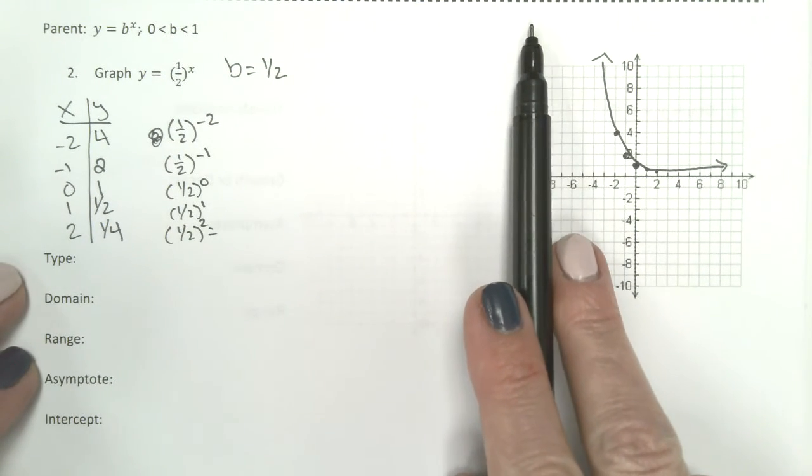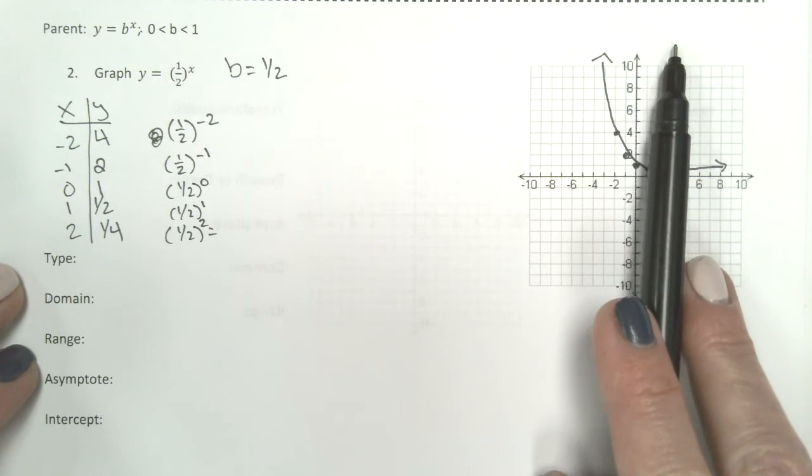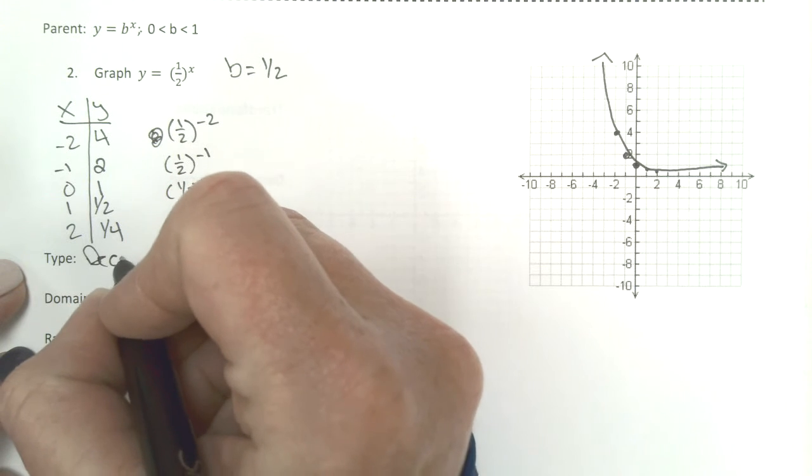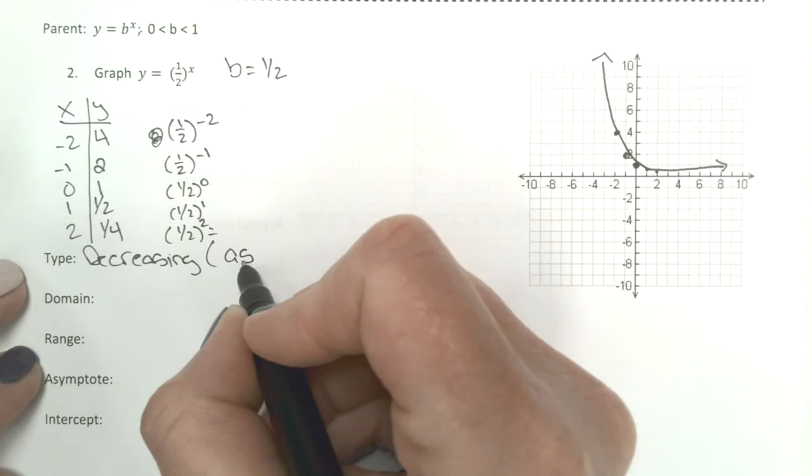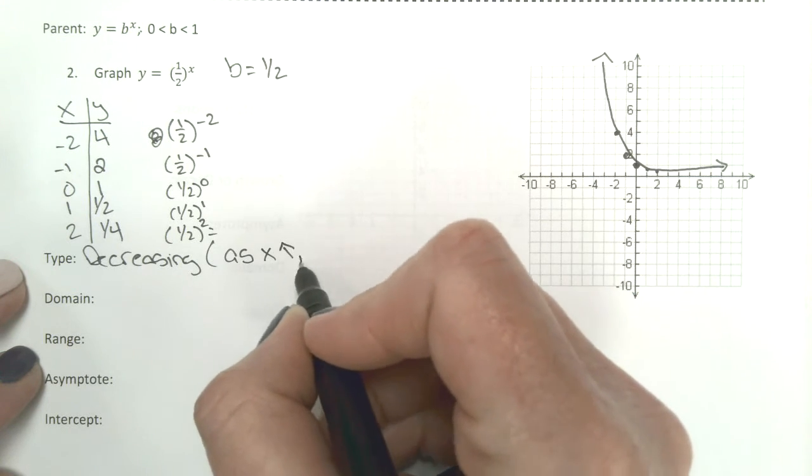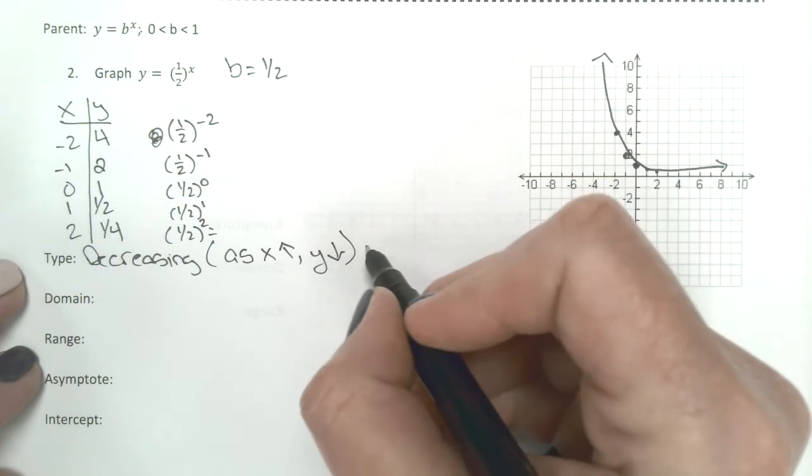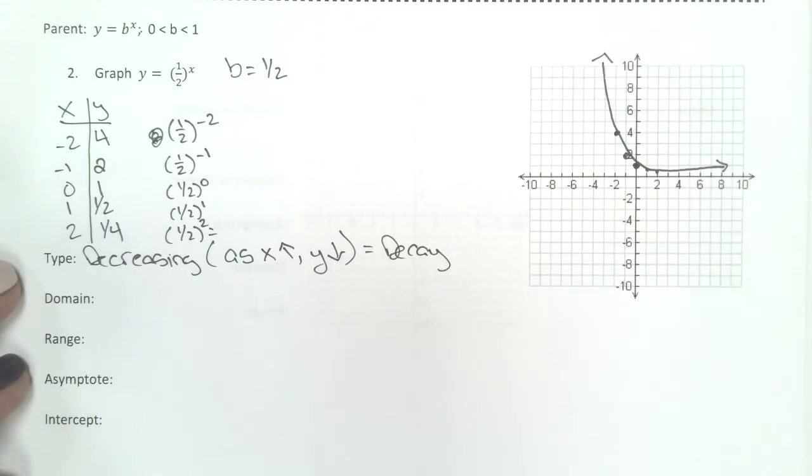So as you go across, as x gets bigger, y gets smaller. So this is a decreasing function. Because as x is getting bigger, y is getting smaller. We will call this a decay function.